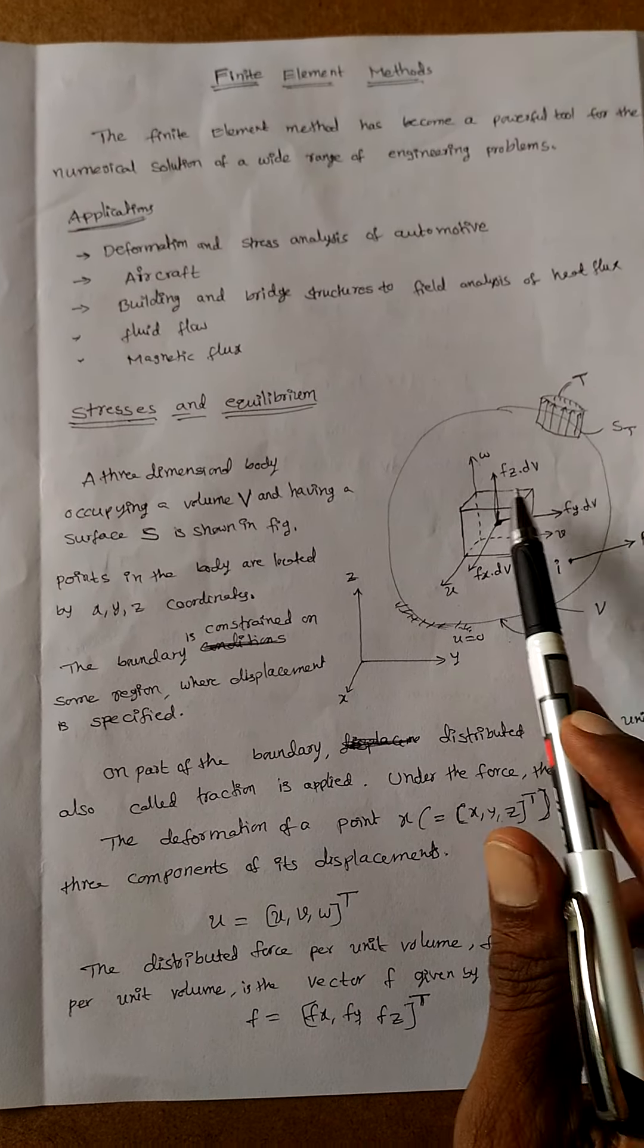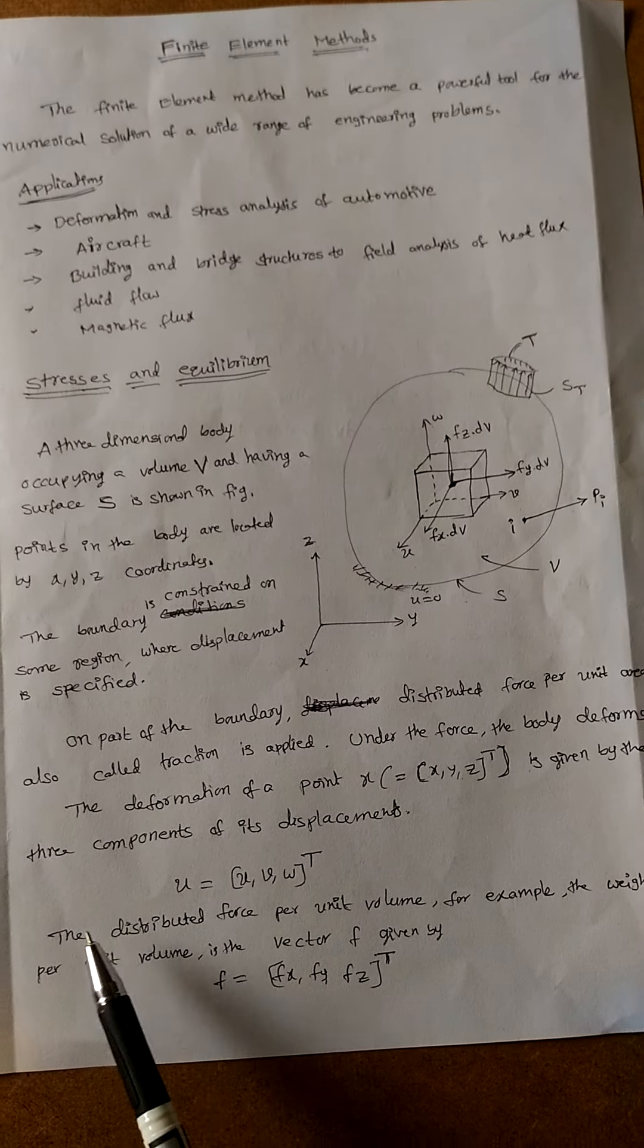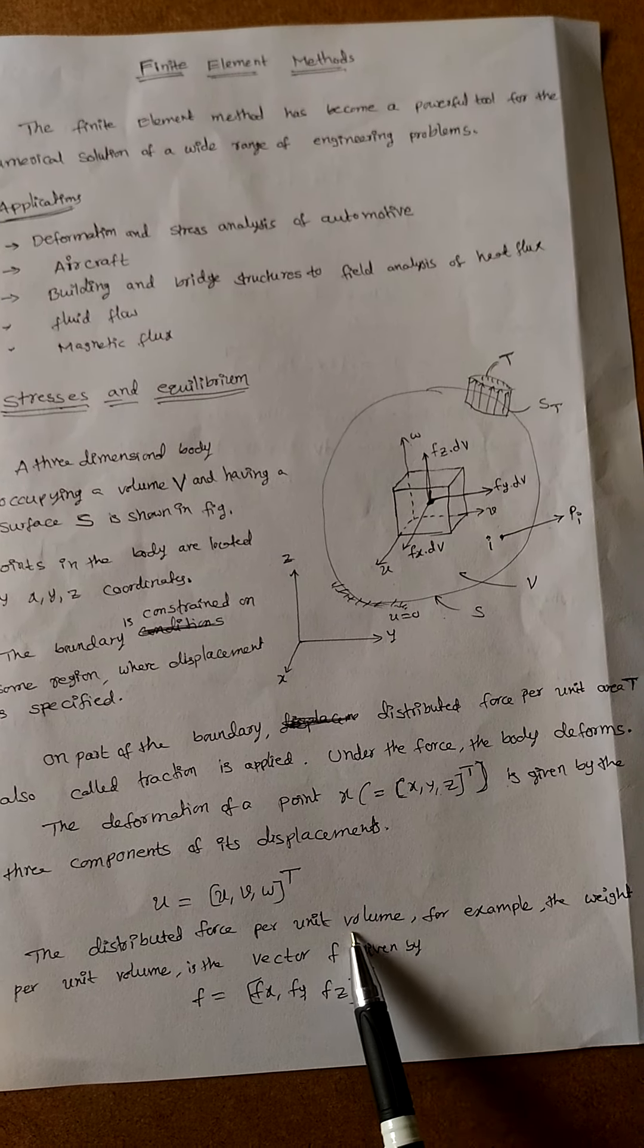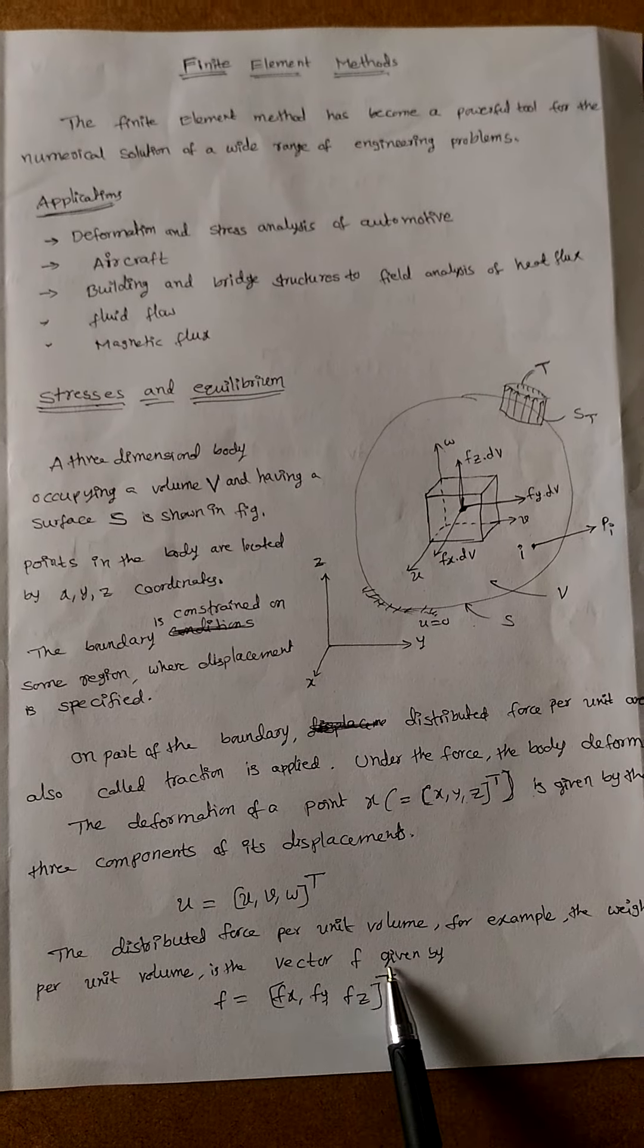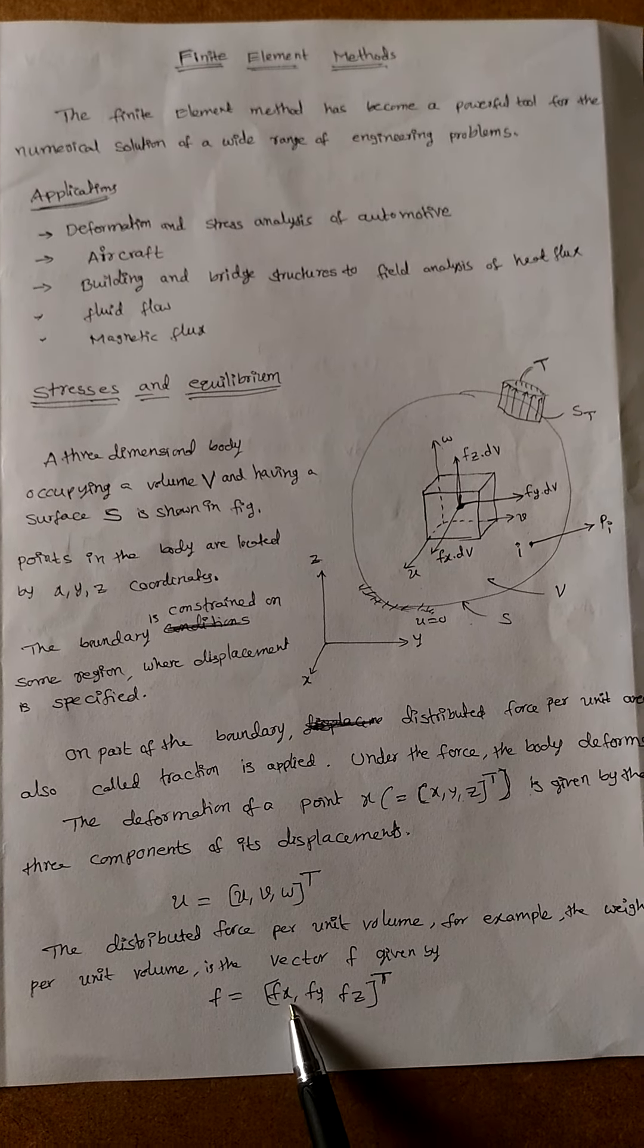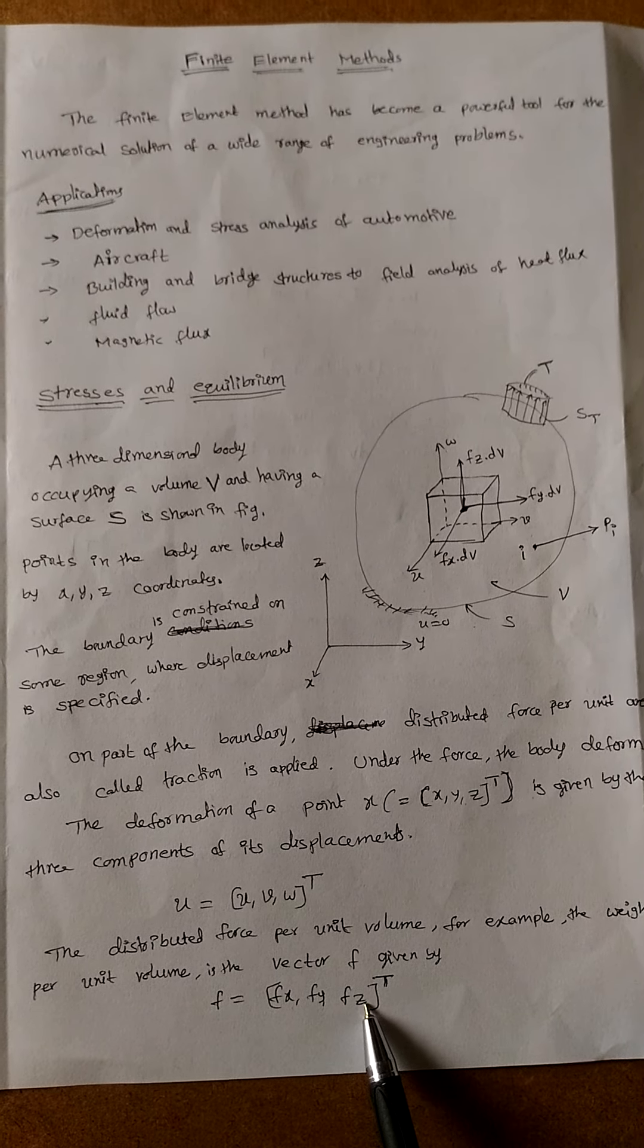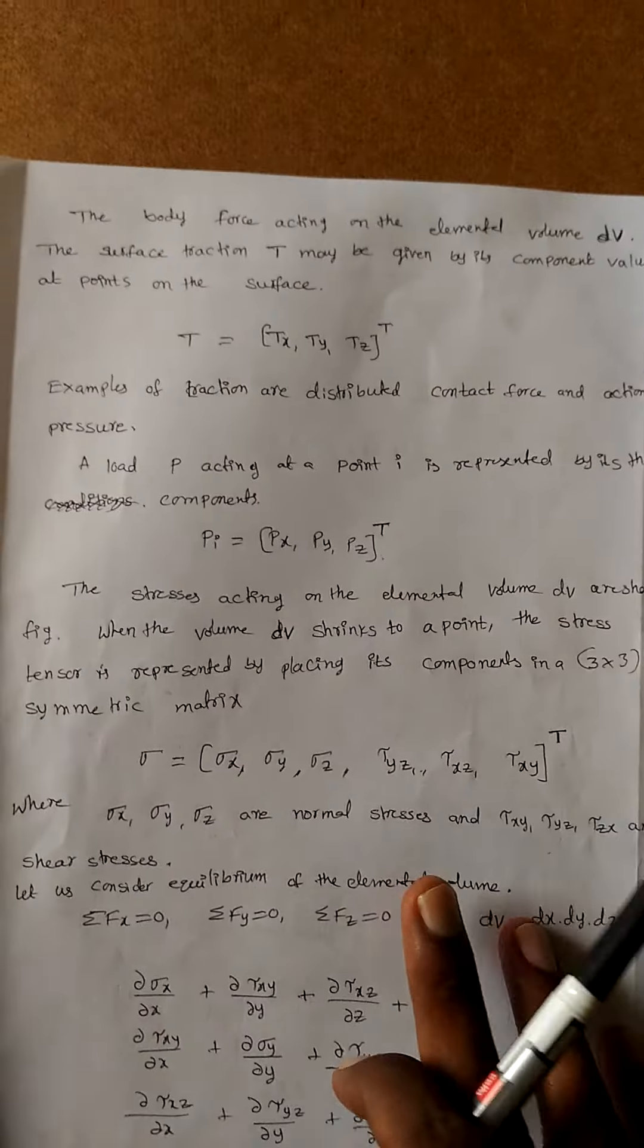The distributed force per unit volume, for example the weight per unit volume, is the vector f given by f = (f_x, f_y, f_z)^T. The body force acts on the elemental volume dv.